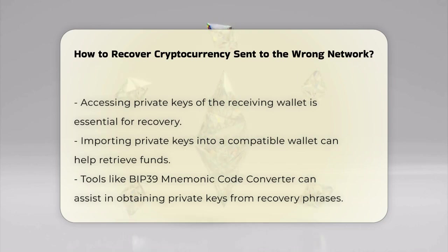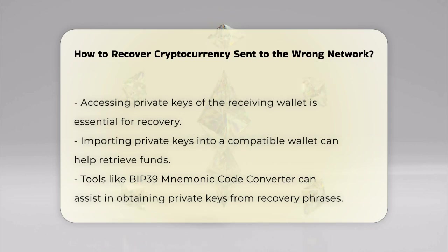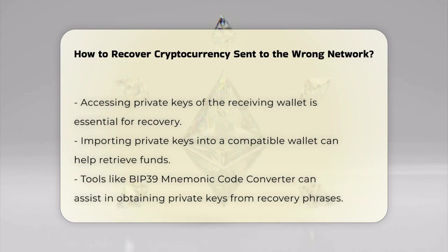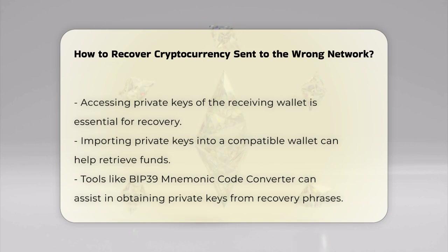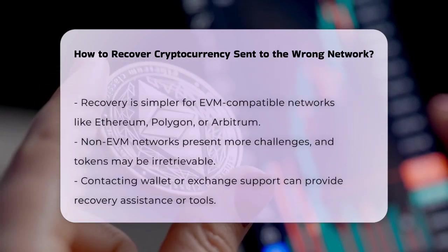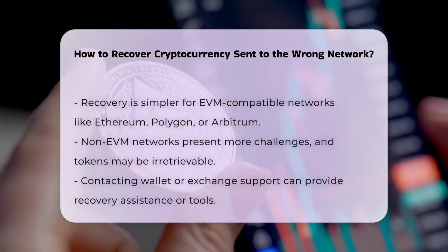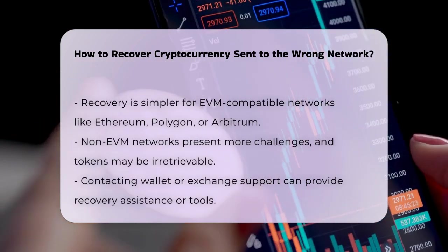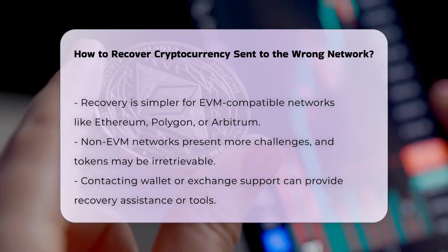For instance, if you sent VET to your ETH wallet, you would need to get the private key for the ETH wallet and import it as a VET wallet in Trust Wallet. Using tools like the BIP-39 mnemonic code converter can also help — you enter your recovery phrase, select the coin or token involved, and obtain the private key from the derived addresses list. This method is particularly useful if you're using a wallet like TrustWallet.